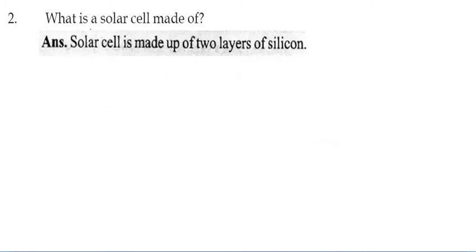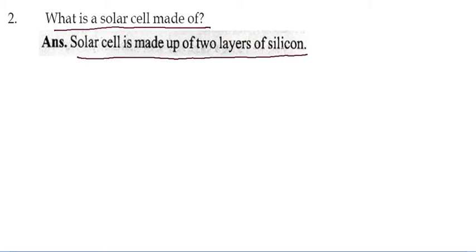What is a solar cell made of? A solar cell is actually made of two layers of silicon.